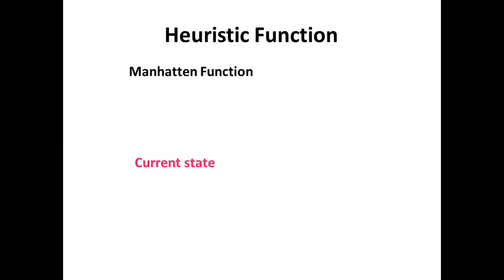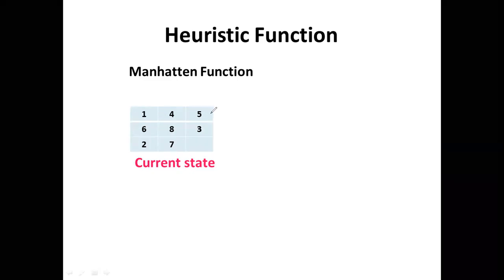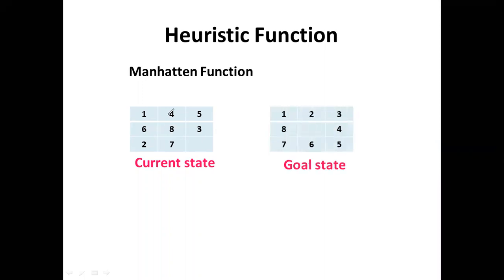Another important function is called the Manhattan function. Consider the eight-puzzle problem. In the eight-puzzle problem, we have a three-by-three grid, and each tile has a number from one to eight, with one empty tile. This is some scattered arrangement, and the goal state is to arrange the numbers as one, two, three, four, five, six, seven, eight in a clockwise pattern, with the middle portion empty.